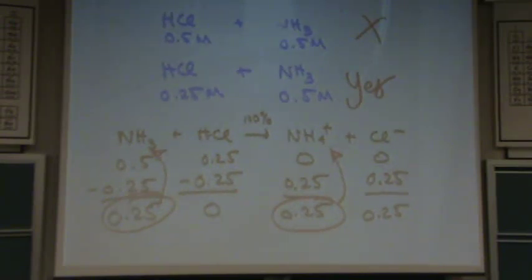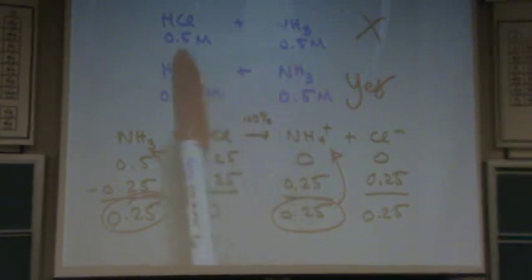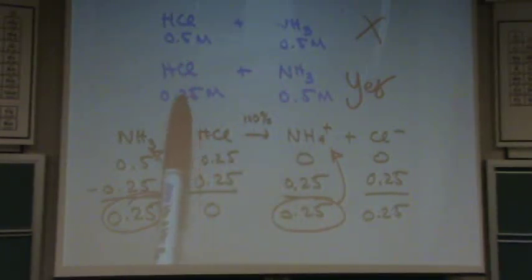And the key is, if you have something that's weak and then something that's strong that's about half the molarity of the original one, that's going to be a buffer solution. If you're not sure, I definitely encourage you to write it out. But if you have a strong and a weak, and the strong one is a lower molarity than the weak one, it's going to end up being some sort of buffer.